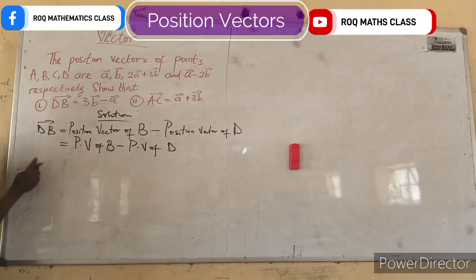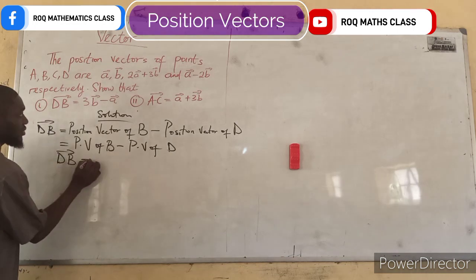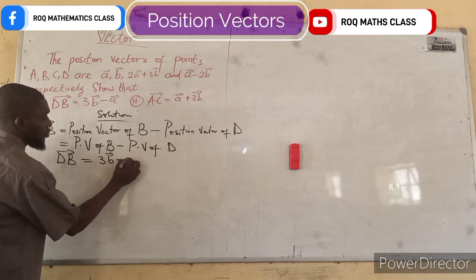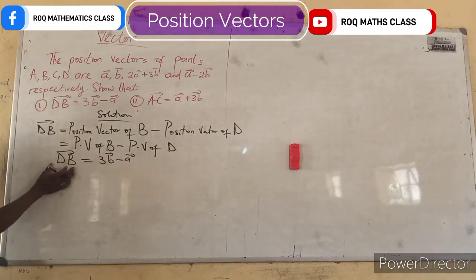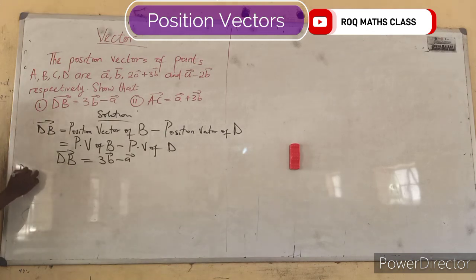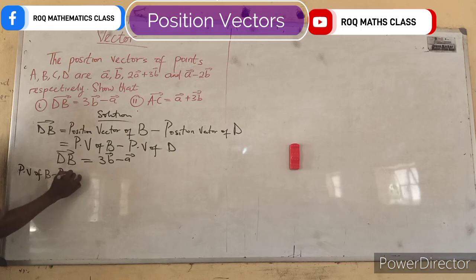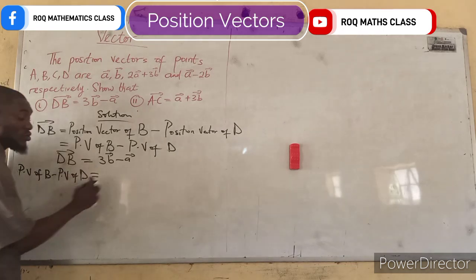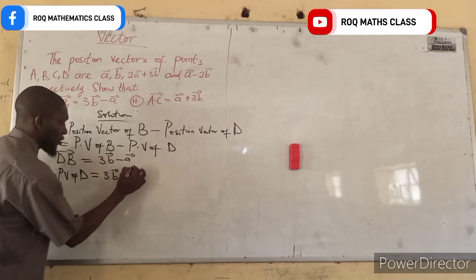Before we move on, the vector in the direction of DB is the same thing as position vector of B minus position vector of D, which must be equal to 3 vector b minus vector a.